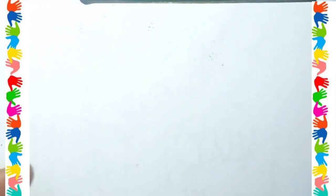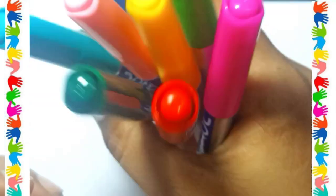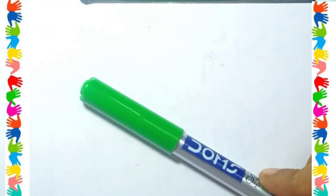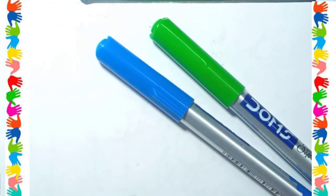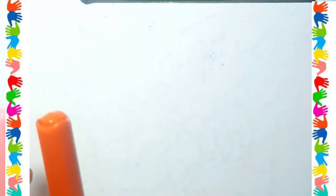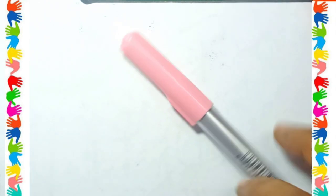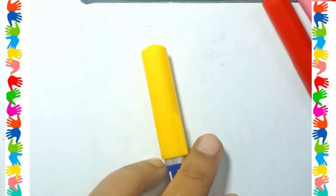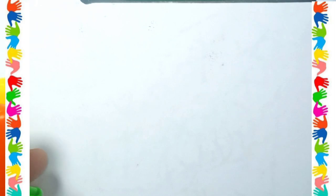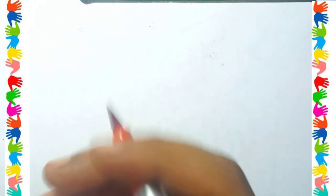Hello, welcome back to my channel. Let's learn some colors: green color, light blue color, deep green color, orange, pink, red, yellow. Let's learn to draw ABC.